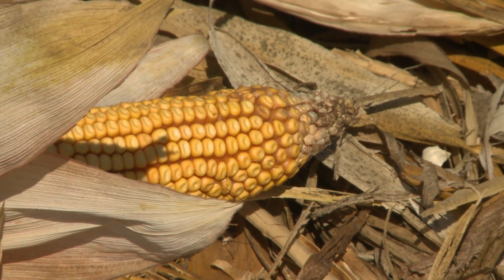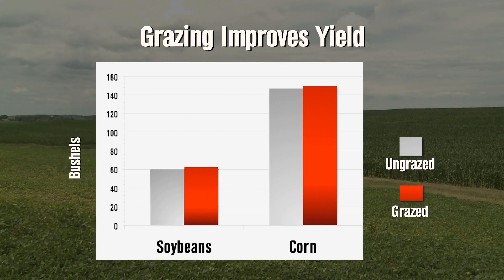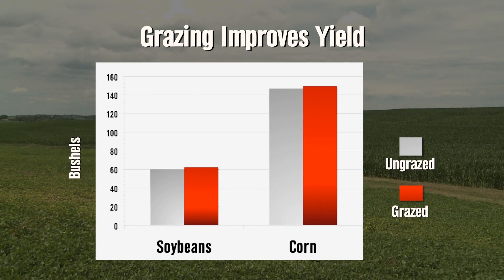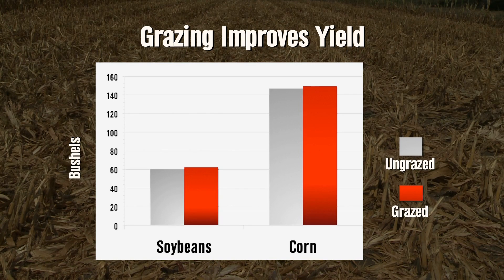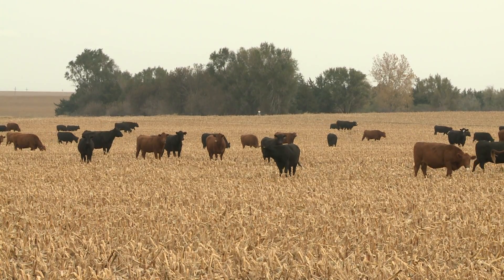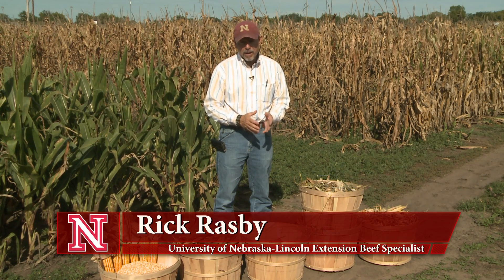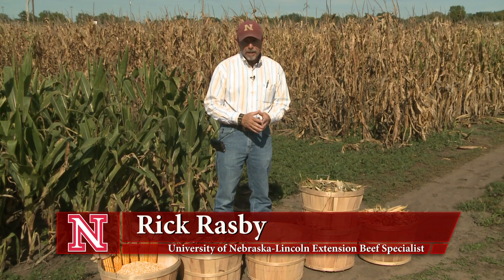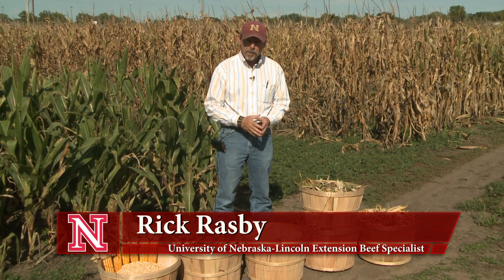In a corn-soybean rotation, we don't see any depression in soybean yield the following year, and we also don't see any depression in corn yield the year after that. We feel that if you graze according to our recommendations, you'll not see a reduction in subsequent yield of both soybeans and corn. In Nebraska, farming and livestock are in a symbiotic relationship, and one of the ways cow-calf producers can lower annual cow costs is to utilize corn residue as part of their nutrition program.